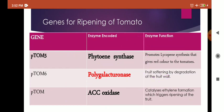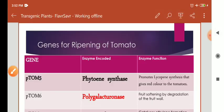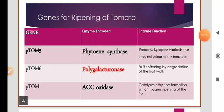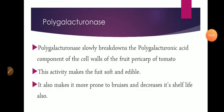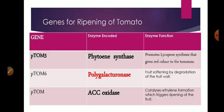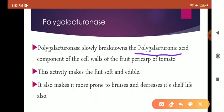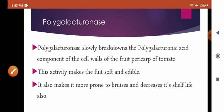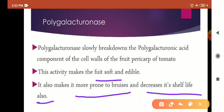The scientist then decided to work on this. The enzyme polygalacturonase breaks down polygalacturonic acid, a component of the cell wall of the fruit pericarp. So the pericarp becomes very thin and it is easily softened. Not only this, this also makes the fruit more prone to bruises and also decreases its shelf life.